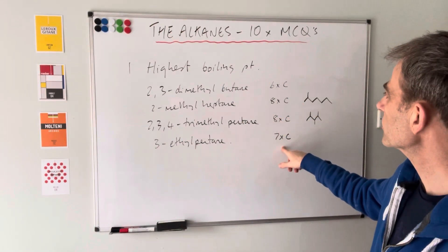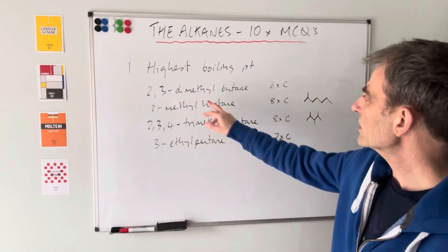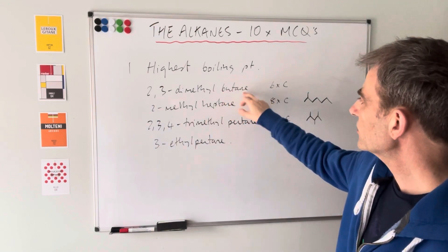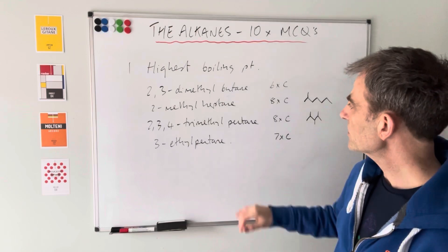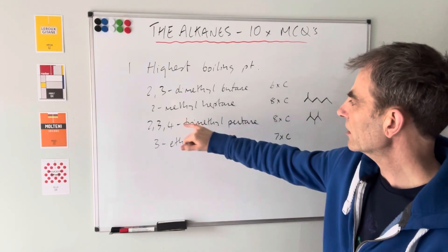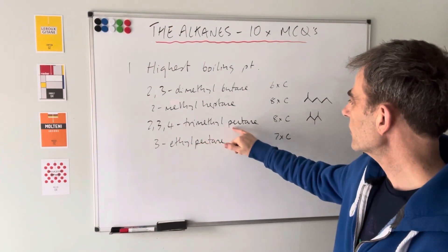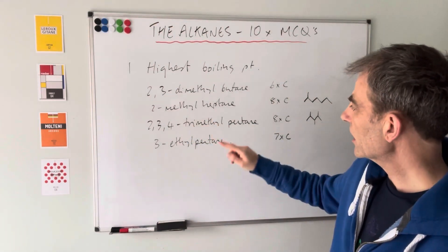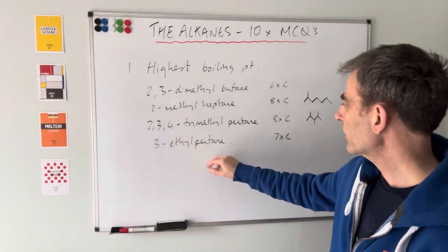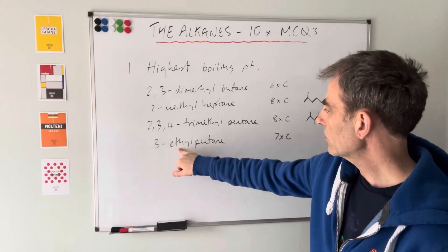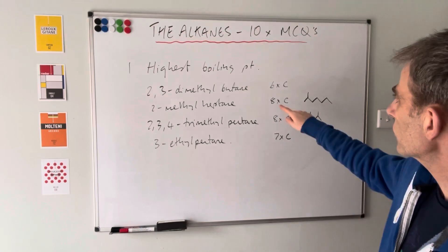I've written down how many carbons each one's got - that'll help us rule some out fairly quickly. 2,3-dimethylbutane has four in the main chain plus two for the two methyl branches, so six carbons altogether. 2-methylheptane has a main chain of seven plus one methyl group, so eight carbons. 2,3,4-trimethylpentane has a main chain of five plus three CH₃ groups, so another eight carbons. 3-ethylpentane has five in the main chain plus two for the ethyl group, so seven carbons.